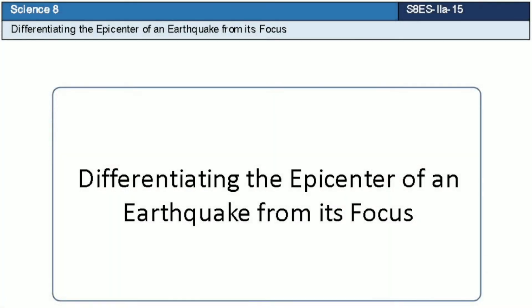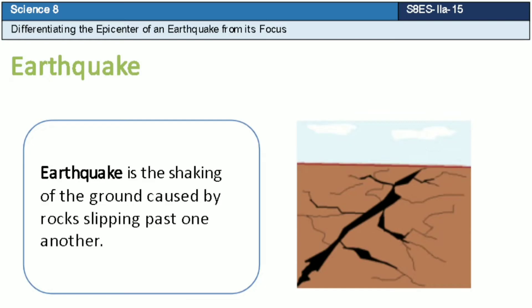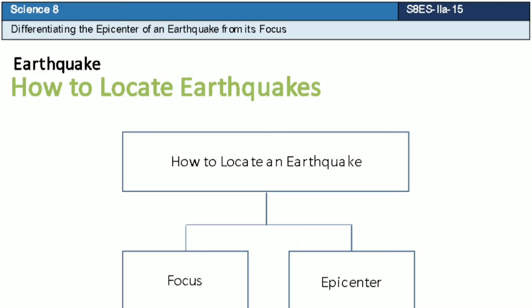Our topic is about differentiating the epicenter of an earthquake from its focus. Earthquake is the shaking of the ground caused by rocks slipping past one another. There are two ways to determine the location of an earthquake: the focus and the epicenter. We will discuss each of them in the succeeding slides.